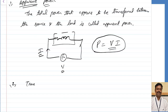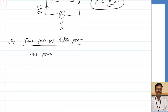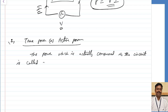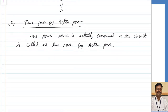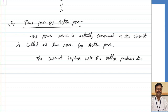Coming to the second type of power, called true power or active power: the power which is actually consumed in the circuit is called true power or active power. The true power is produced by the current that is in phase with the voltage.